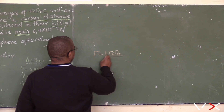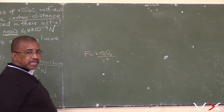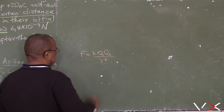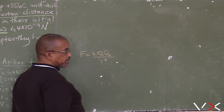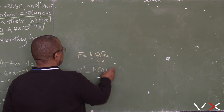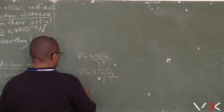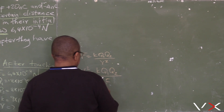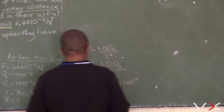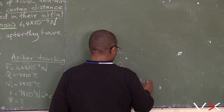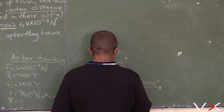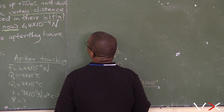We use the formula F equals k times q1 times q2 over r squared. We want r, so we make r squared the subject of the formula: r squared equals k times q1 times q2 over F. k is 9 times 10 to the power 9, q1 is 8 times 10 to the power minus 9.